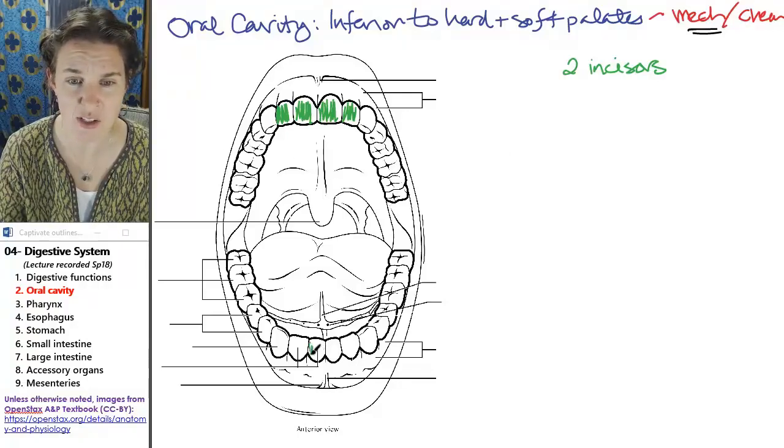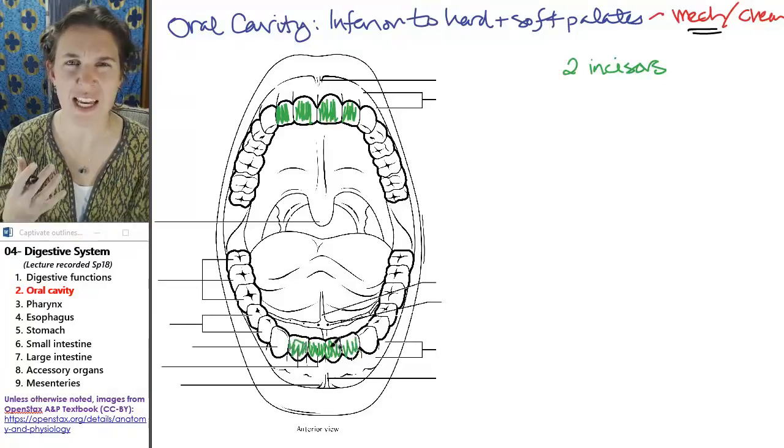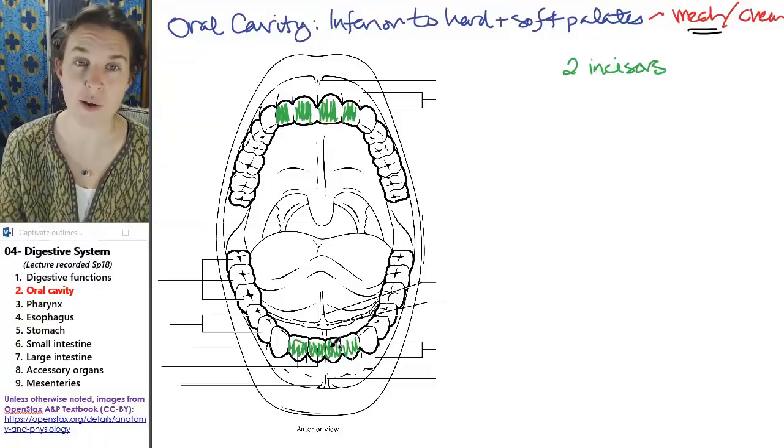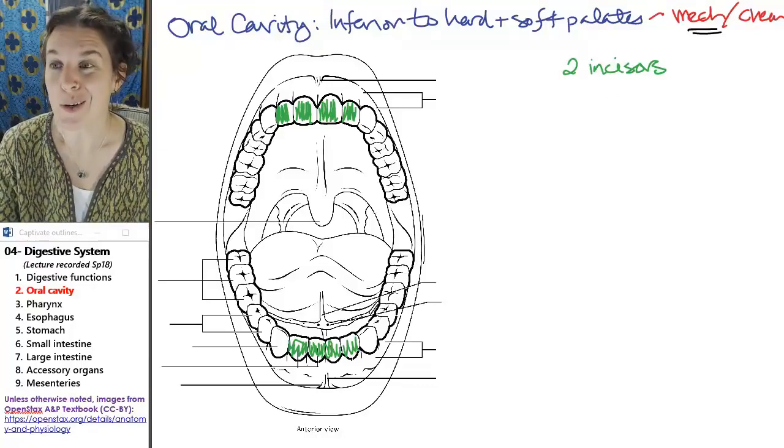These guys are your incisors on the bottom as well. Now, the incisors are teeth responsible for cutting and slicing your food whether it be vegetable or animal.